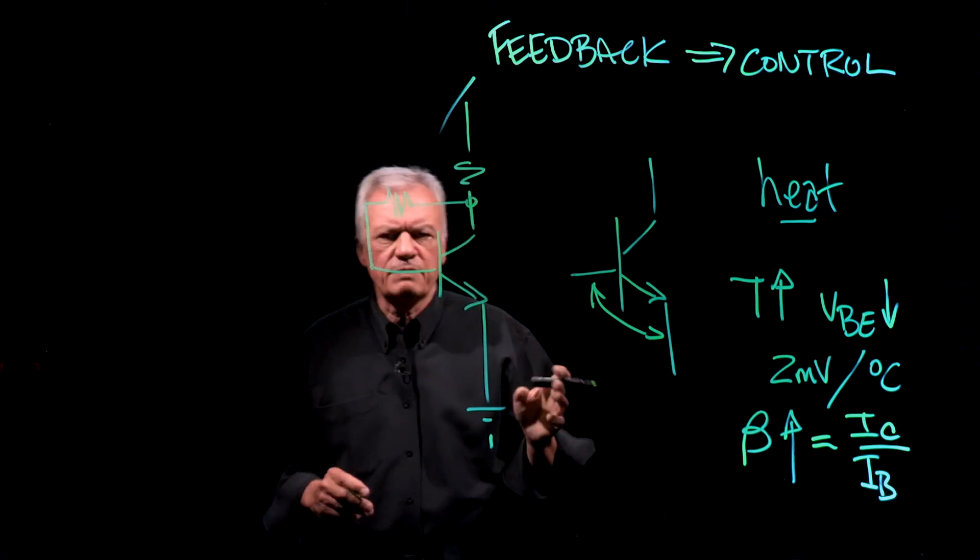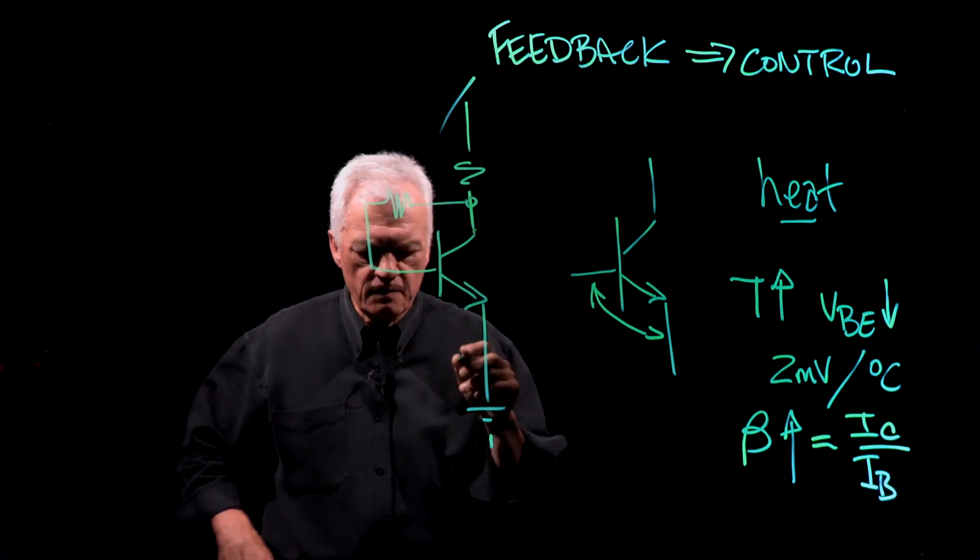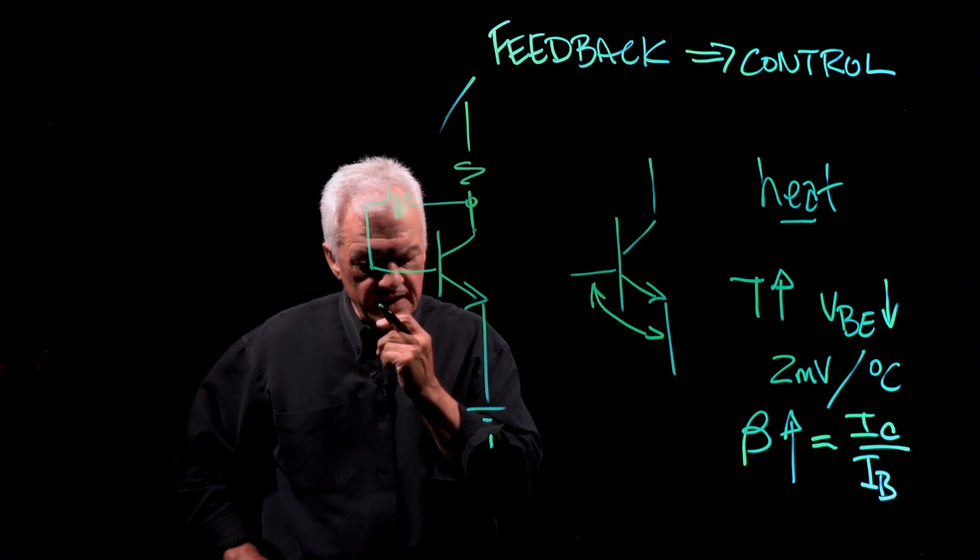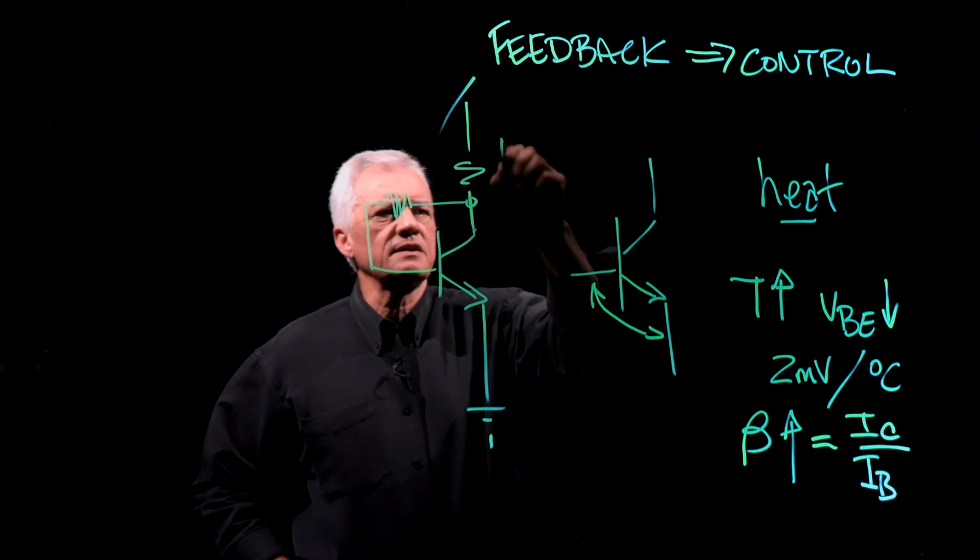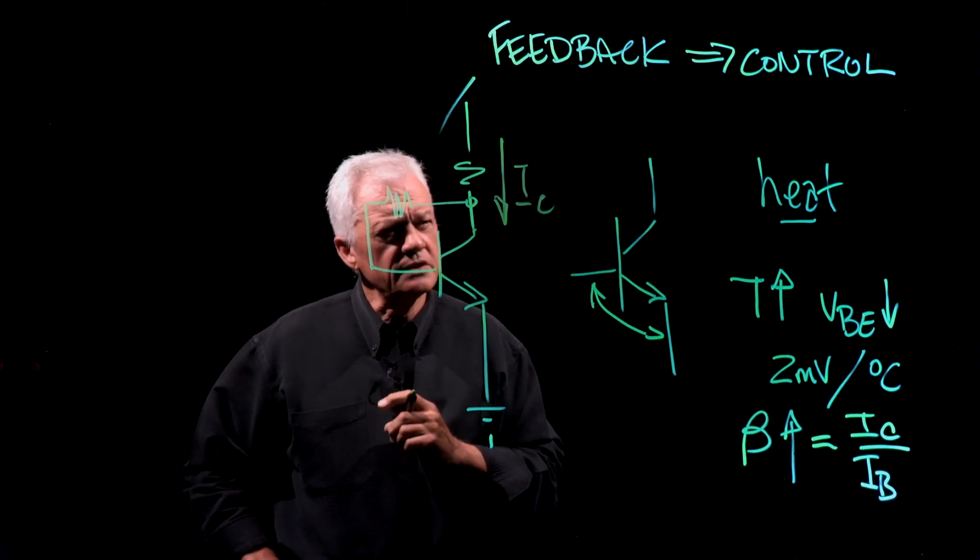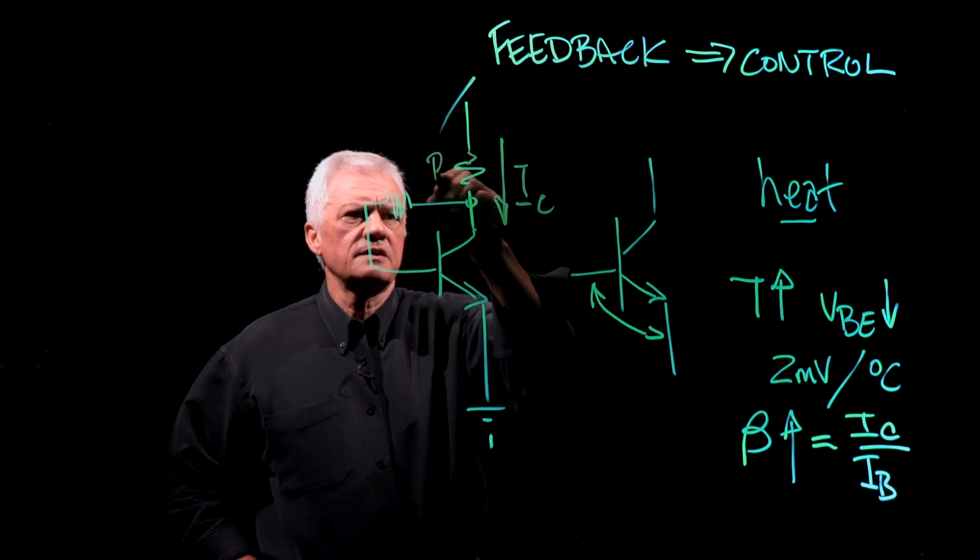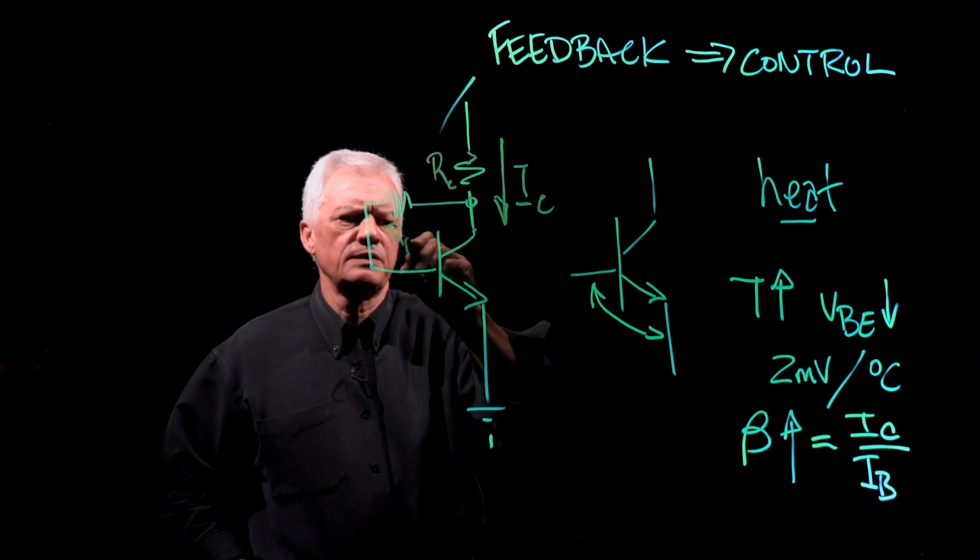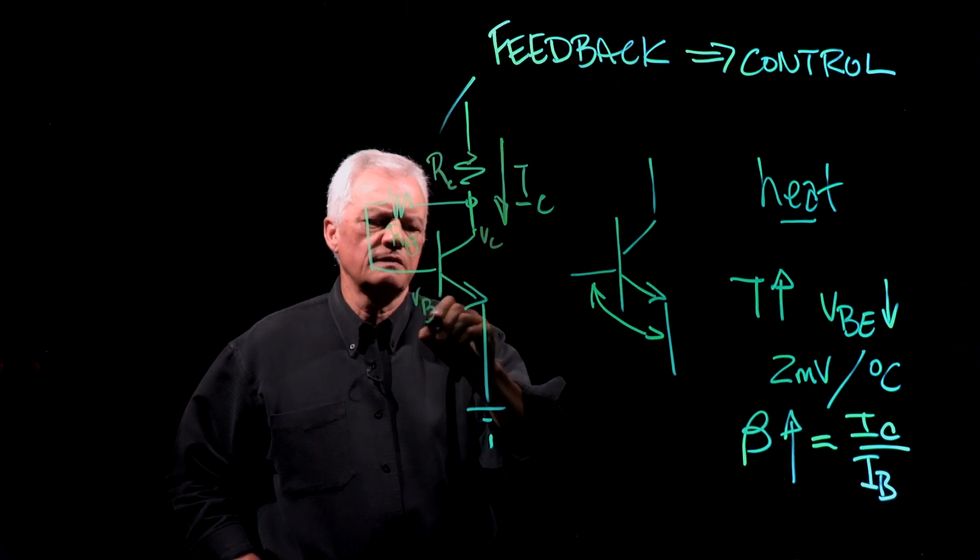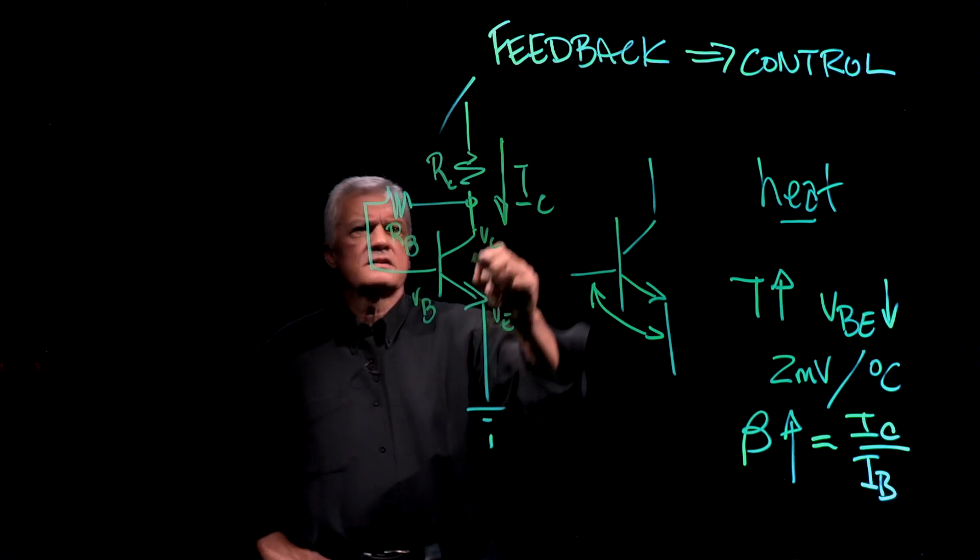So now that we're using collector feedback, which is one way of controlling this NPN transistor, we still have to understand, for example, someone will say, can you calculate for me, what is that collector current then anyway, given that you're using collector feedback? Okay. Well, let's look at this device. Let's call this RC, RB. And we know we're looking for VC, VB, VE, those types of numbers. Let's see what's going on. This is VCC.